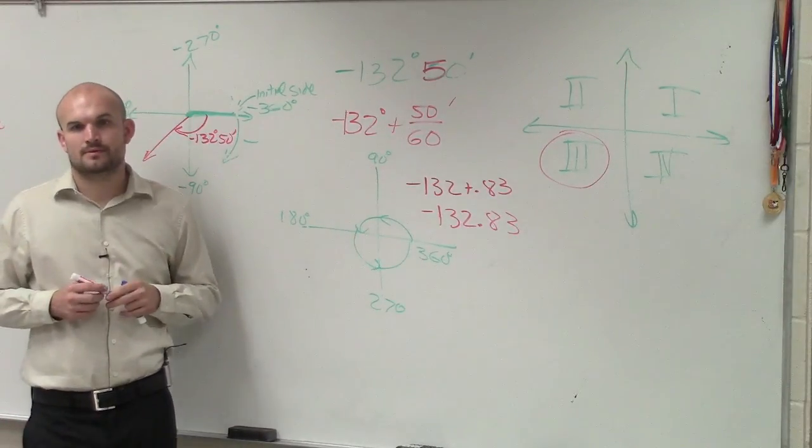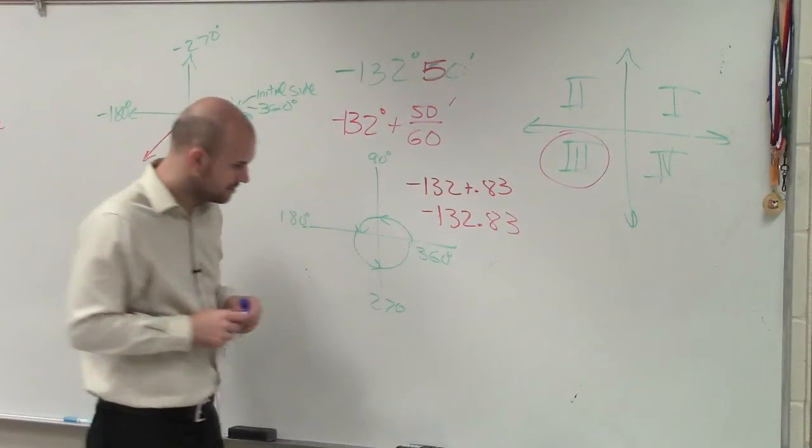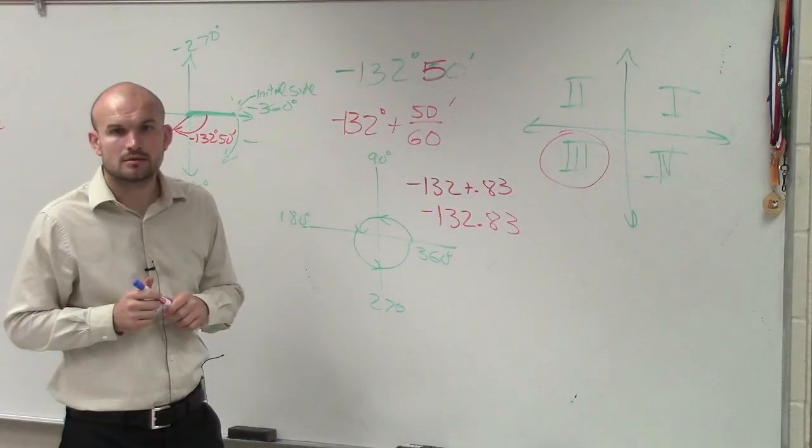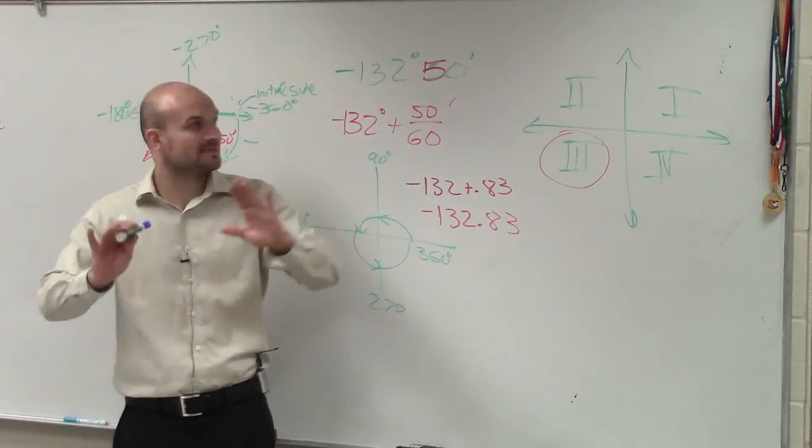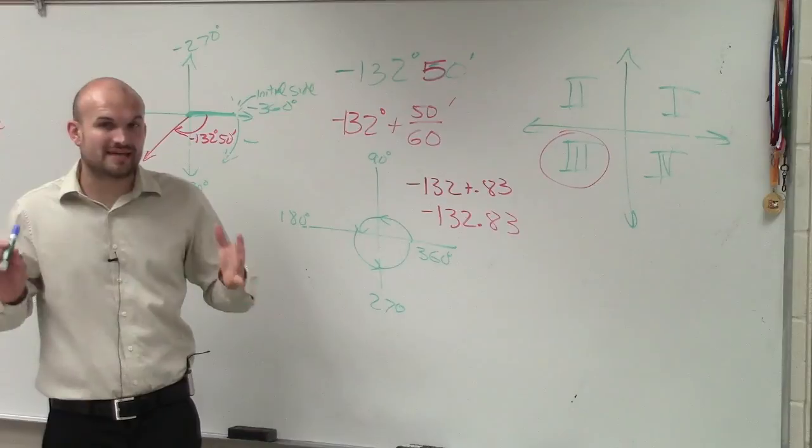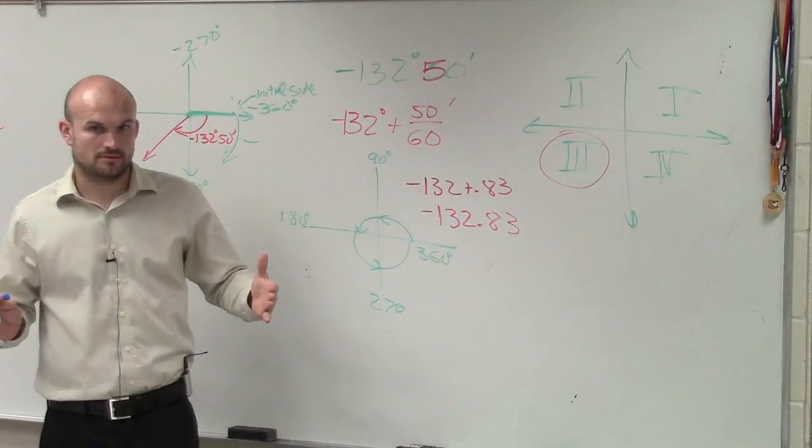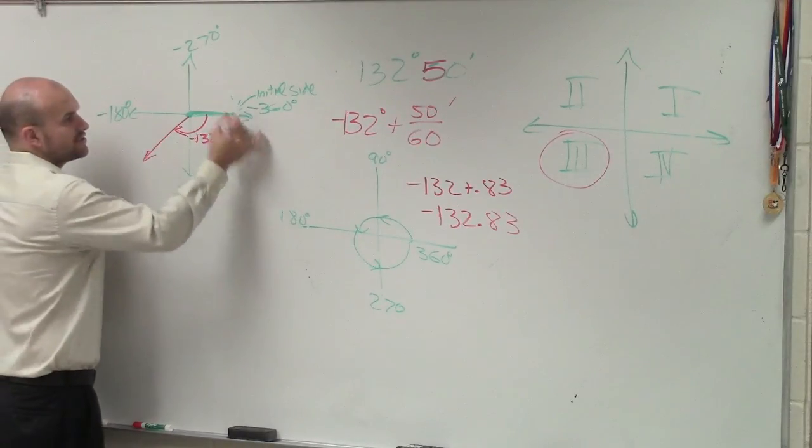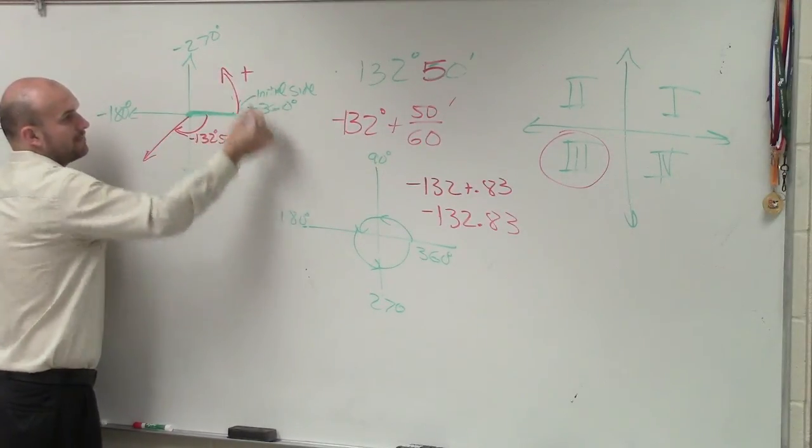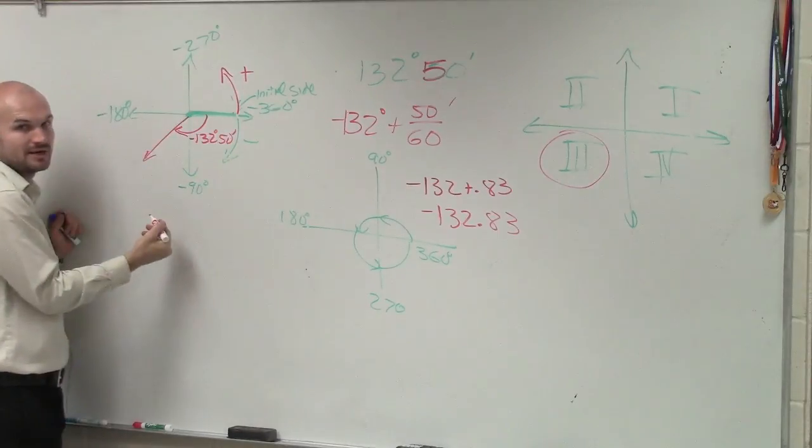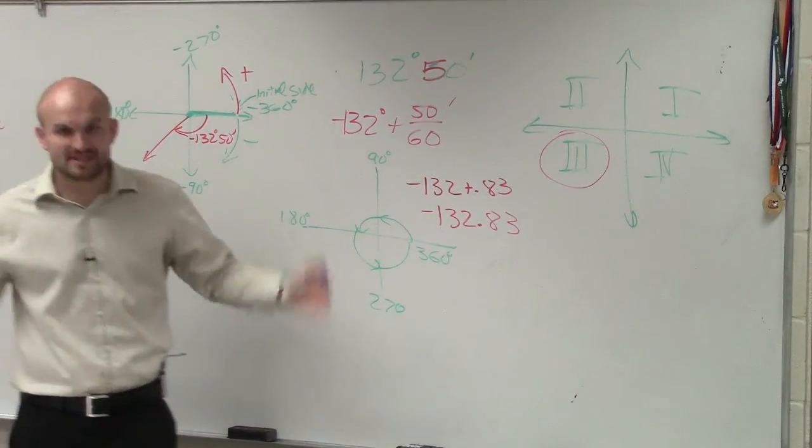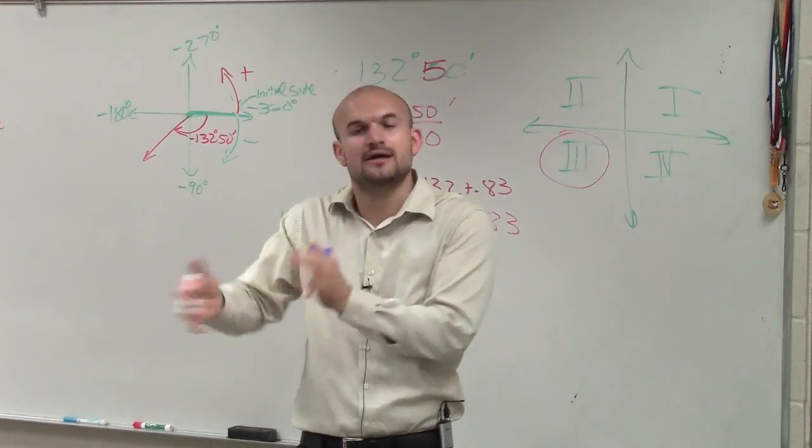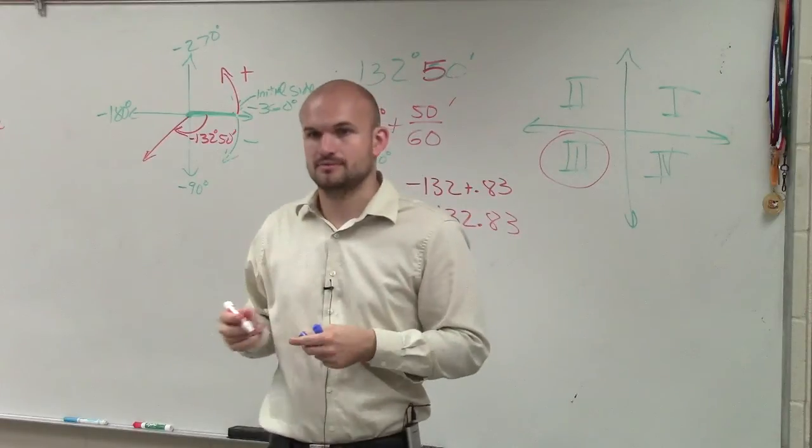Can I just say 131 plus 0.83? No, no, no, you're not adding. Remember, the value of the angle is always going to be positive. So forget about the negative symbol. All the negative tells you to do is which direction do you go, counterclockwise or clockwise. You're just taking the absolute value of 132 plus 50 minutes, but you go in the negative direction.